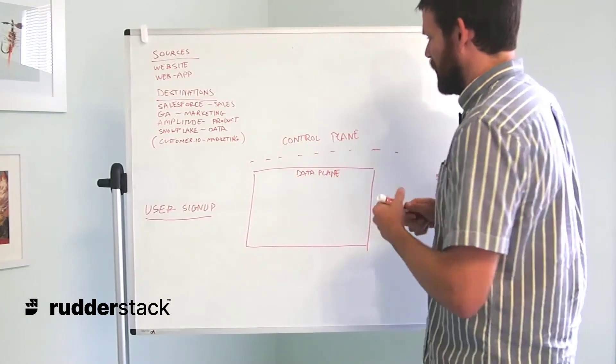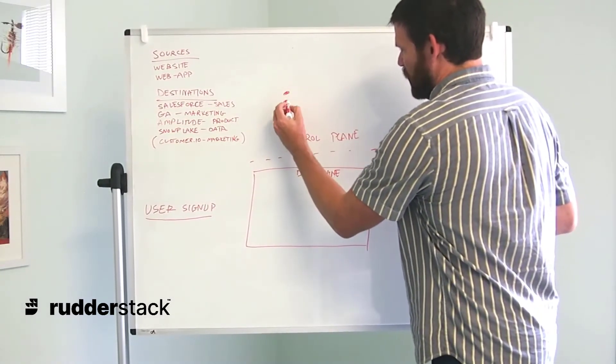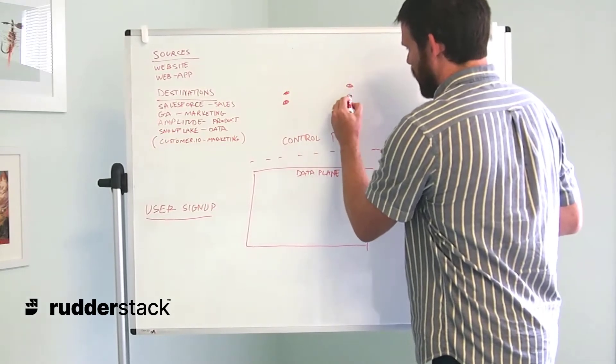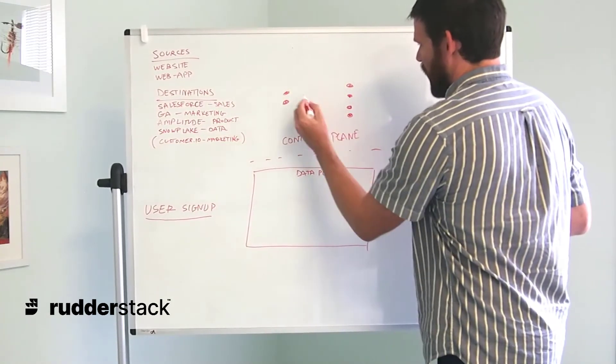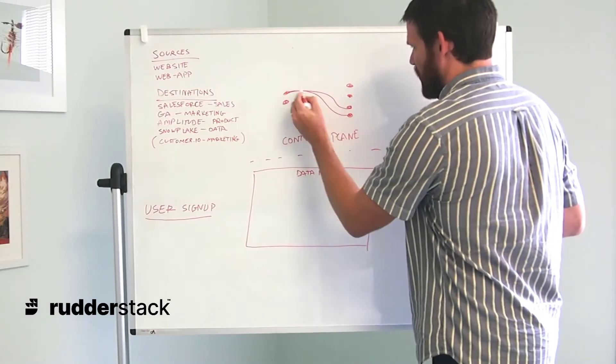The control plane is going to be our dashboard. This is where we're going to set up all of the pipelines. We have these various sources and the various downstream tools, and we're going to tell the app where to send these.